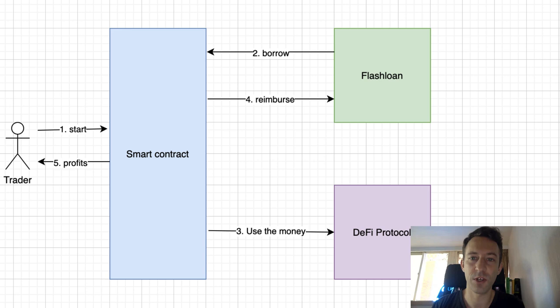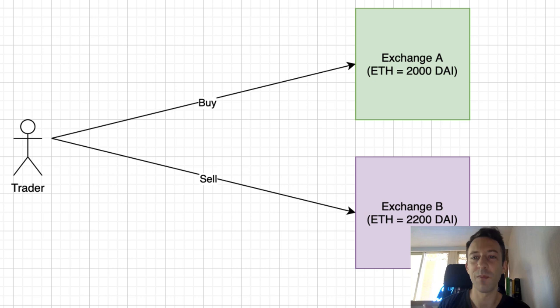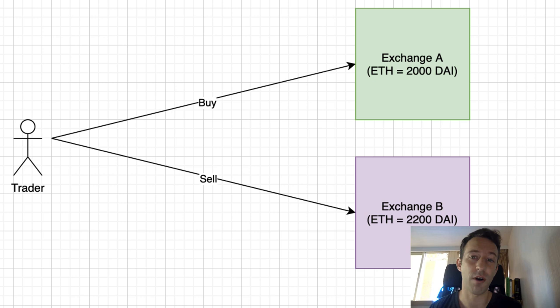Next, what about arbitrage? Arbitrage allows you to make money if you spot a price difference for the same asset across two different exchanges. For example, if Ethereum is worth 2,000 DAI on one exchange and 2,200 DAI on another, you buy on exchange A and sell on exchange B, making 200 DAI of profit.